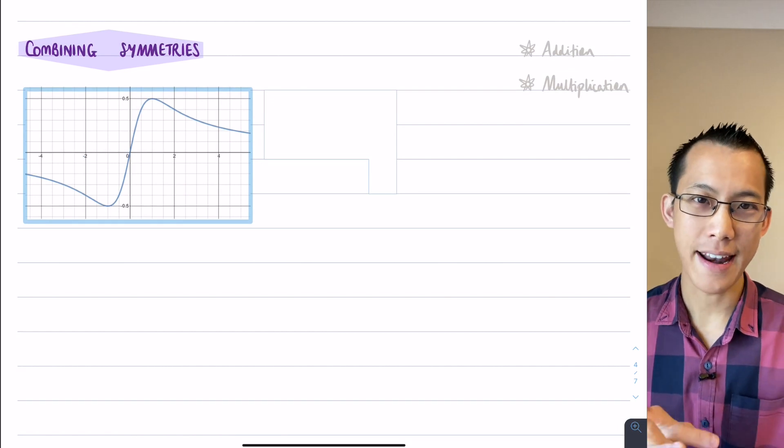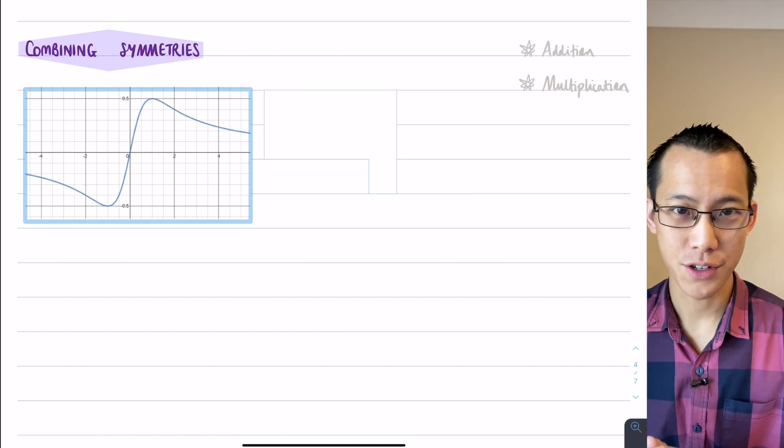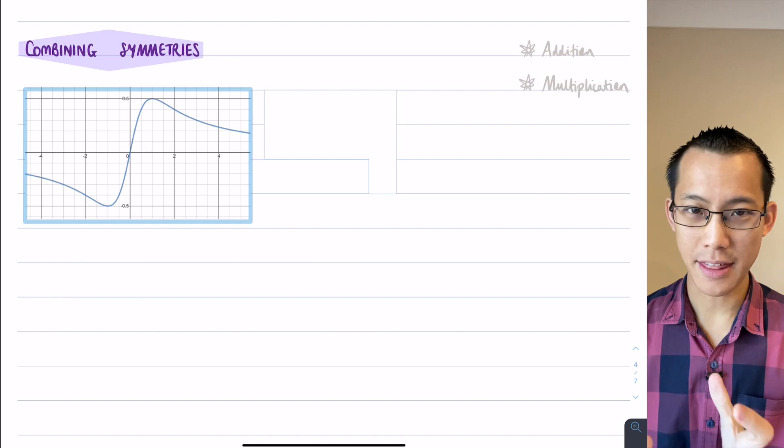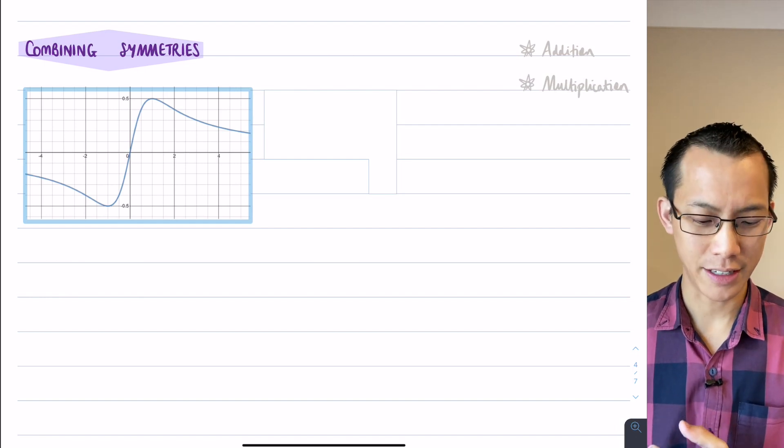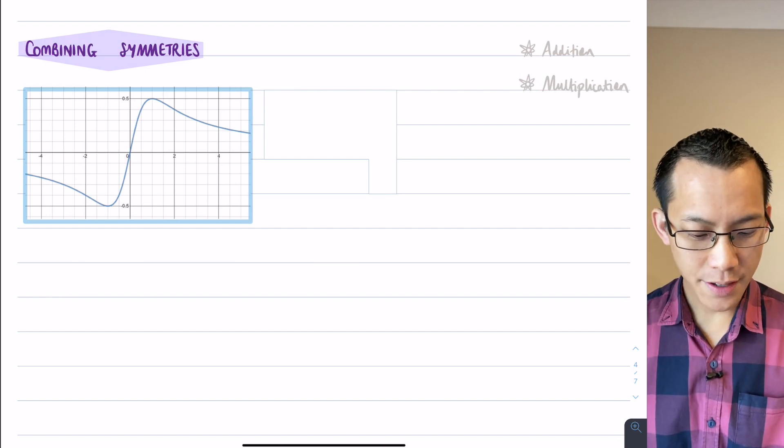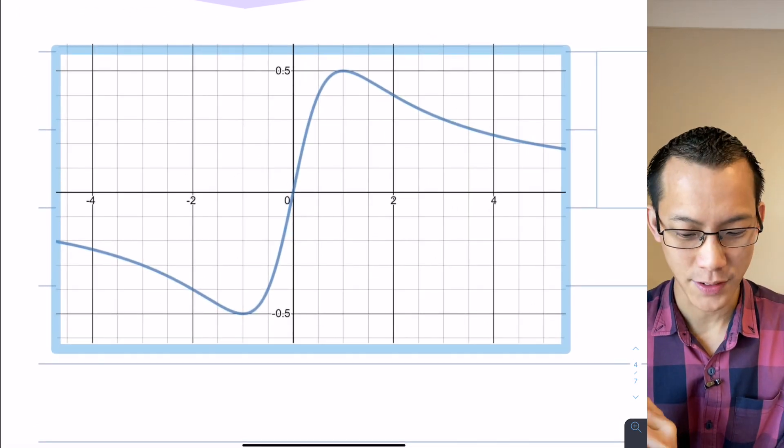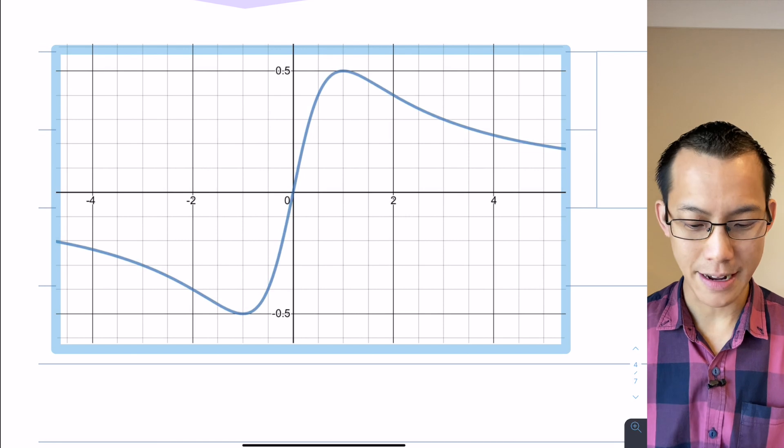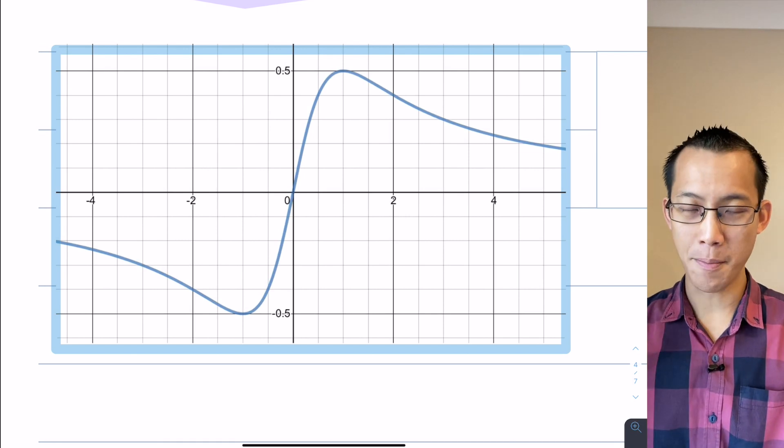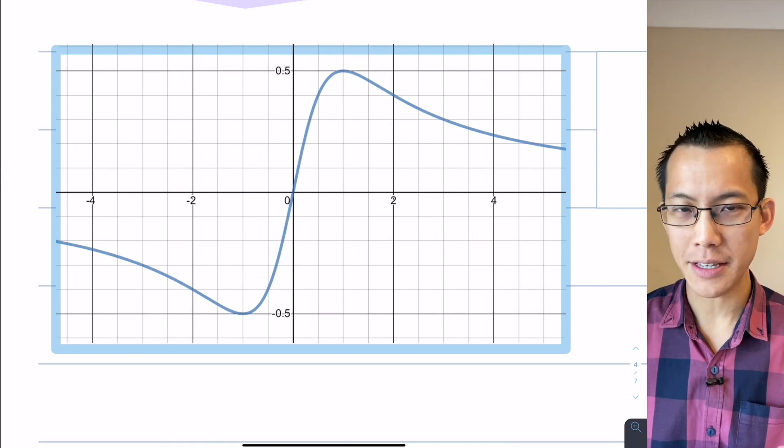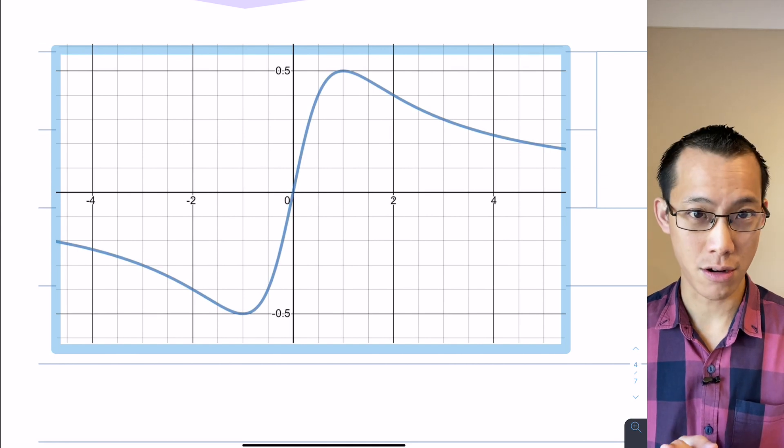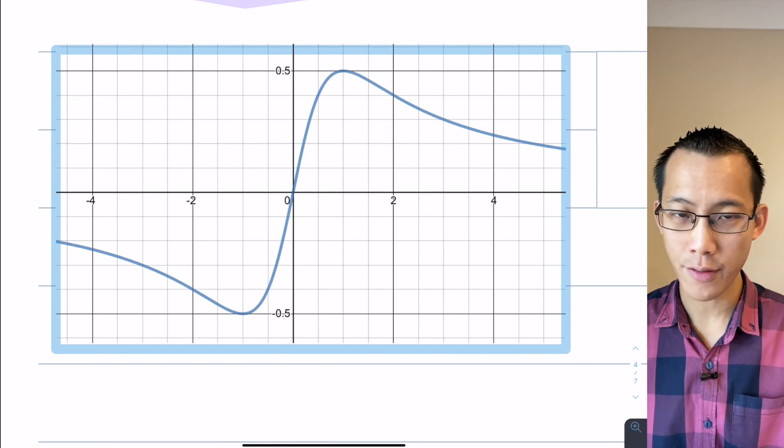So now I want us to think about how to combine these symmetries because this is where things start to get really interesting and prickly. This is a function here which I actually picked out because a student asked me about this function and what happens when you integrate this. Now this comes back to the big idea: what do I mean when I say it can be useful to know what the symmetry of a function is?